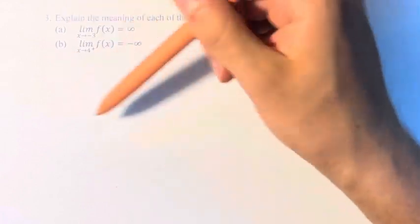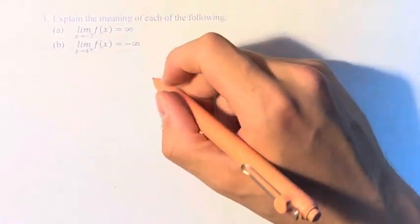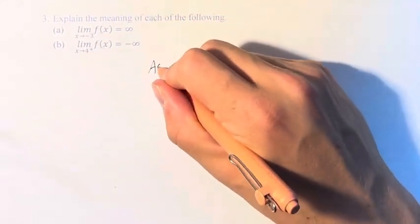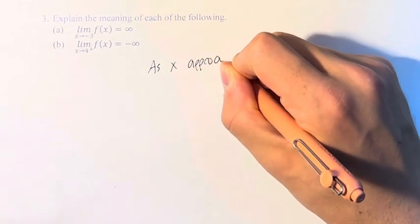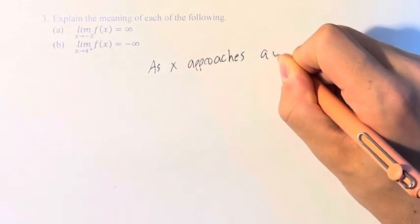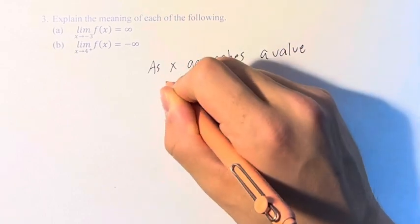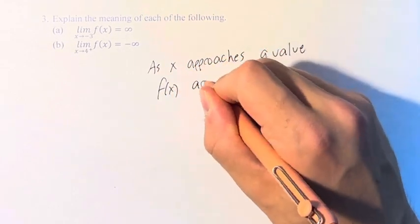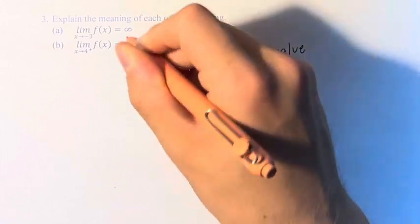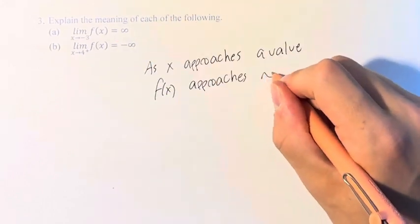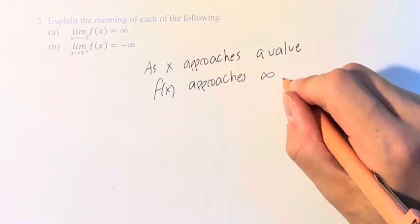What these limits mean is that as x approaches a value, then the value of the function approaches another value — or in this case, infinity or negative infinity.